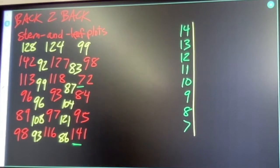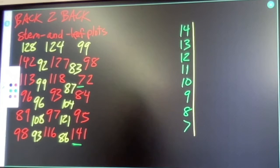I'm going to put my yellow numbers on this, just like a normal stem and leaf plot. We've got 128, 124, 121.